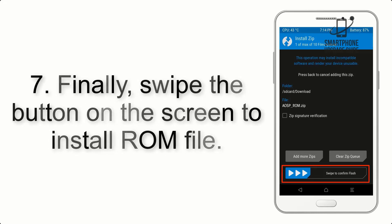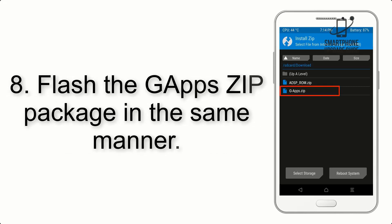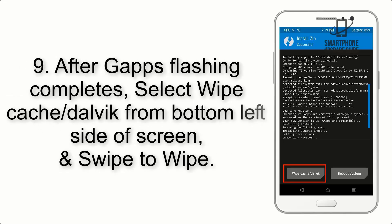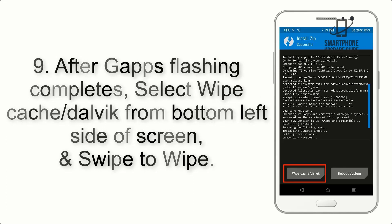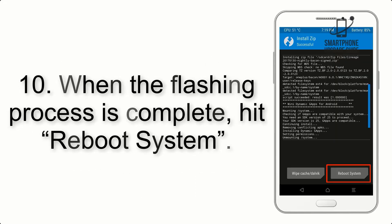Step 7: swipe the button on the screen to install the ROM file. Step 8: flash the GApps zip package in the same manner. Step 9: after GApps flashing completes, select Wipe Cache and Dalvik from the bottom left side of the screen and swipe to wipe.